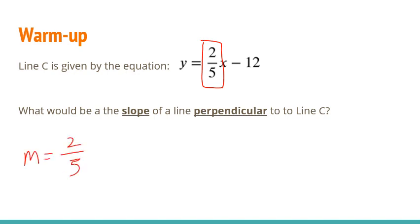If we wanted a parallel line, then we would use 2 fifths again. But since we want a perpendicular line, we're going to want to use the negative reciprocal of 2 fifths. So remember a negative reciprocal is flipping the sign and flipping the fraction. So negative 5 over 2 is going to be the slope of a line that's perpendicular to line C.